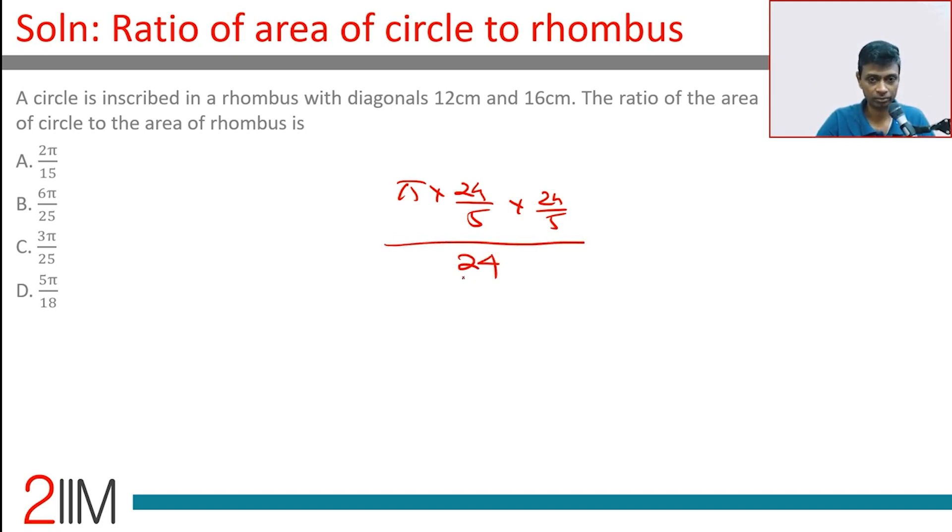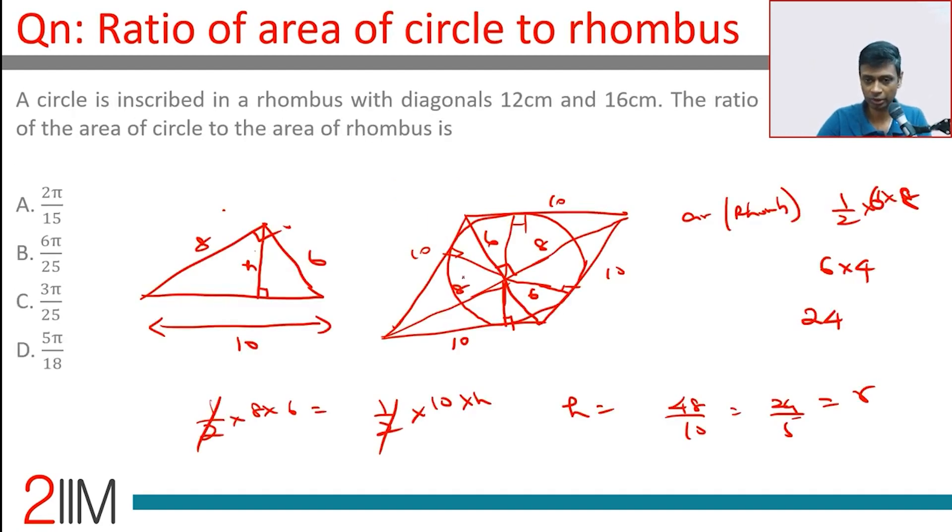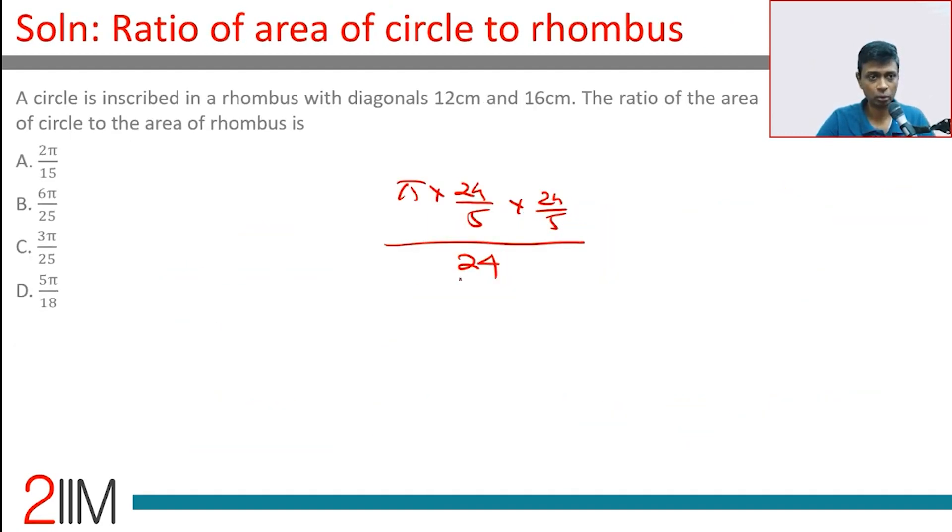Area of circle to area of rhombus. Wait, area of the rhombus is not half into 6 into 8, it is half into 12 into 16.